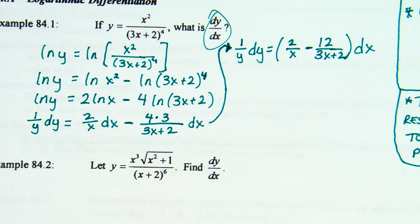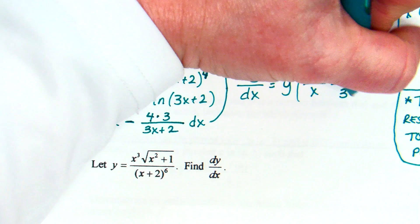Can you solve for dy/dx? Dy is already on the left, so you're going to divide the dx over to the left. The quantity (2/x minus 12/(3x+2)) just stays. Then for the 1/y on the left, you multiply the y over to the other side. So I'm going to write this as: y times the quantity (2/x minus 12/(3x+2)).